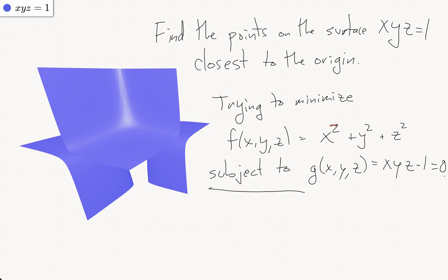So the first step is to find the gradients. Nabla f is 2x i plus 2y j plus 2z k, and nabla g is yz i plus xz j plus xy k.